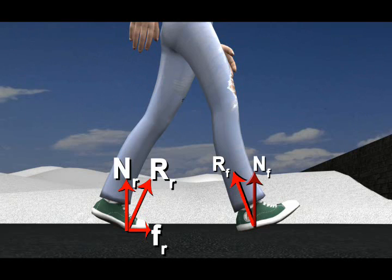Its vertical component is what we call normal reaction. The horizontal component of this reaction force is in backward direction and is provided by friction. Thus, the front leg retards us.